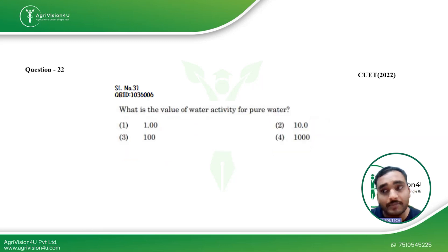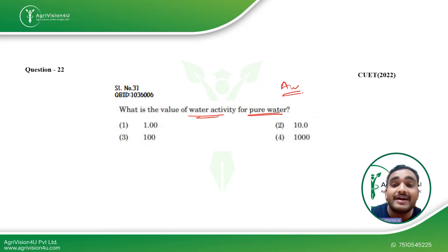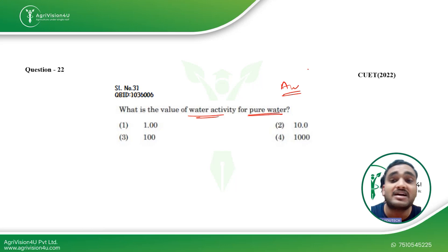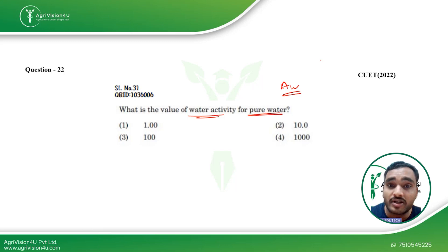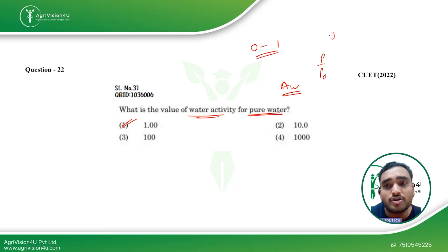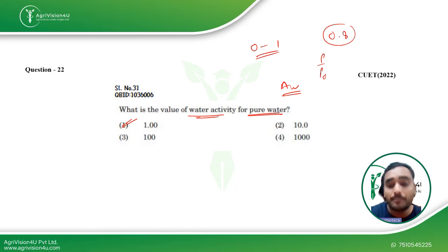Coming to the next question: what is the value of water activity for pure water? Water activity, referred to as AW, is the amount of free water present in your food — water not bound and available for microbial action. Bound water is unavailable for microbial action and cannot be removed by drying. Water activity is also expressed as P/P₀: vapor pressure of water in the food divided by vapor pressure of pure water. Its scale runs from zero to one, and below 0.8 the food has a considerably good shelf life. For pure water, the answer is 1 — option A. This was also asked in CVT 2022.